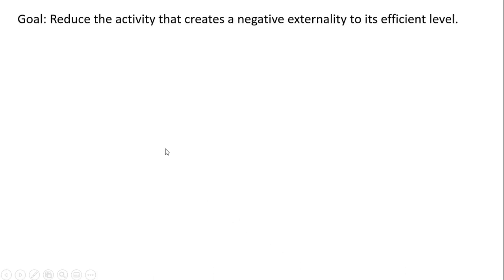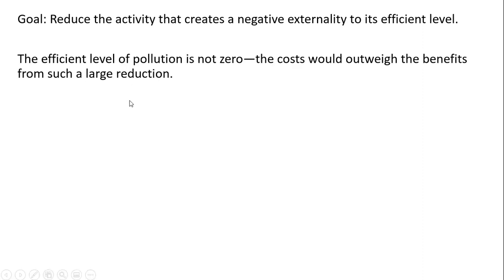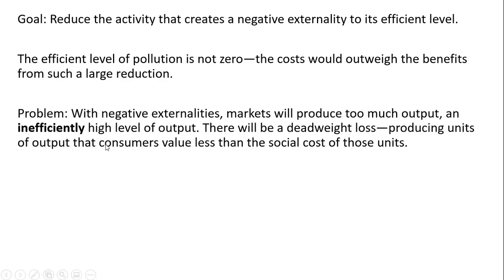So the goal here is to reduce the activity that creates a negative externality to its efficient or optimum level. The efficient level of pollution is not zero — the cost would outweigh the benefits from such a large reduction. The problem with negative externalities is that markets will produce too much output, an inefficiently high level of output.